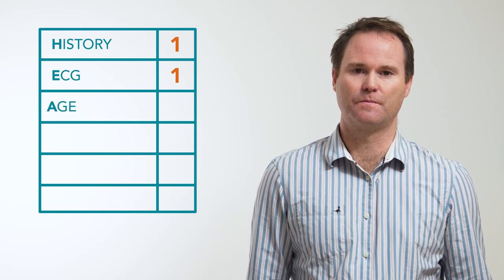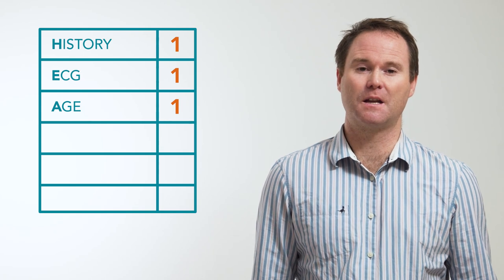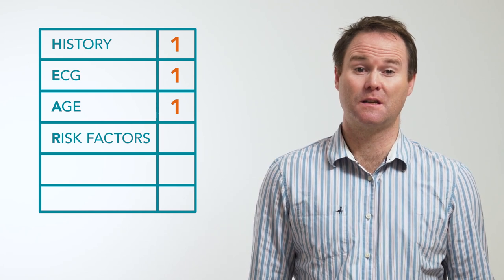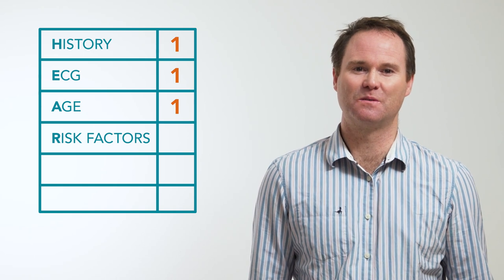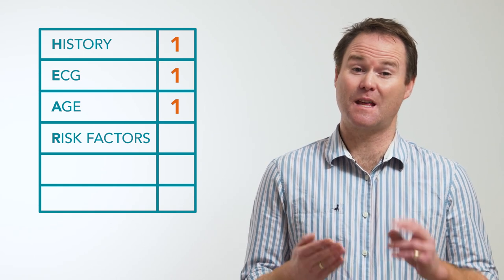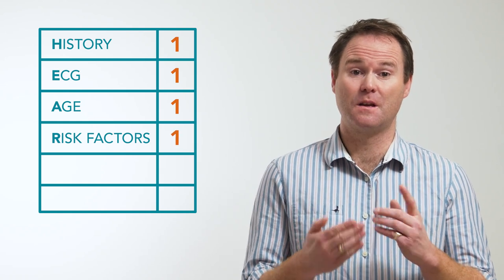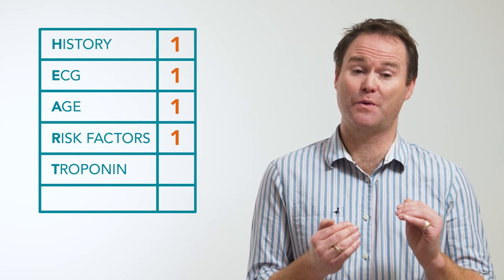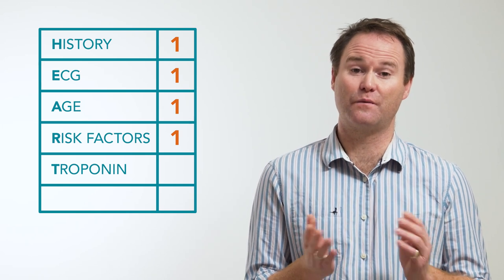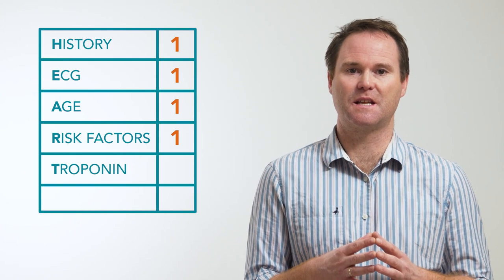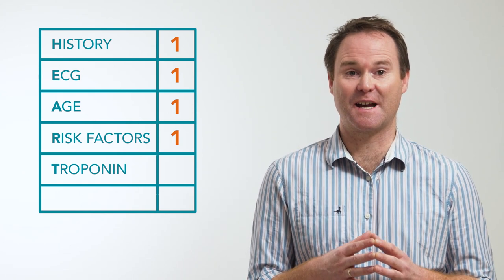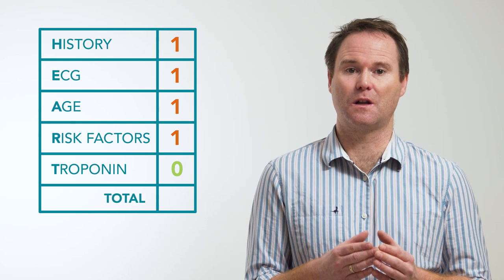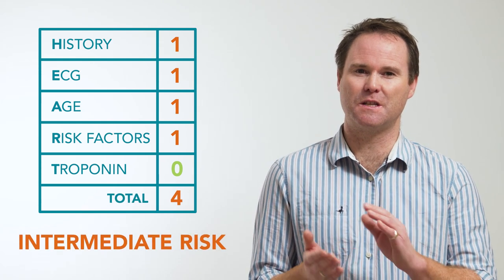Mr. Giddings is 62, so he would score one for age. In terms of risk factors, he has a father who had an MI in his fifties and he has hypertension. He did smoke, but because he quit more than 90 days ago we would not score this as a risk factor — so that makes two risk factors and would score a one. His high-sensitivity troponin of 27 nanograms per litre is below the sex-specific cutoff of 34, and in the traditional interpretation of the HeartScore would score a zero. This gives a total HeartScore of four, putting the patient into an intermediate risk category.